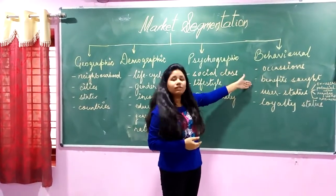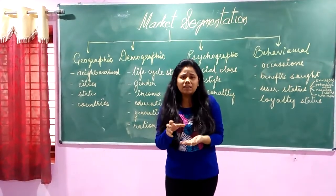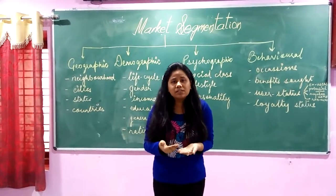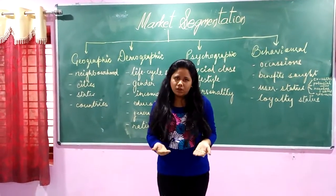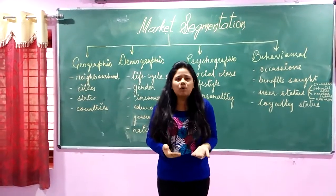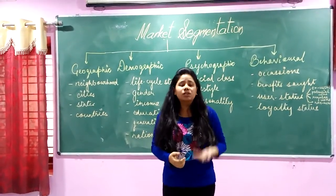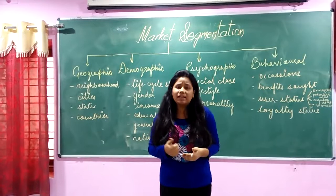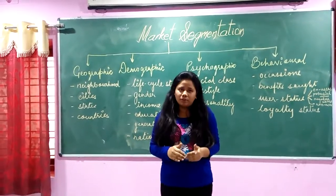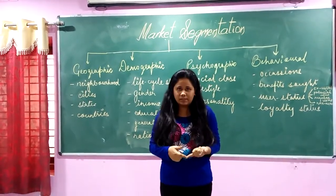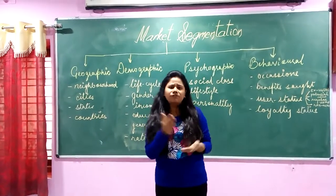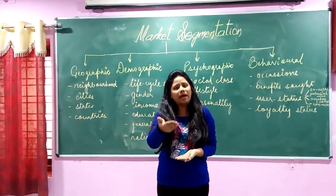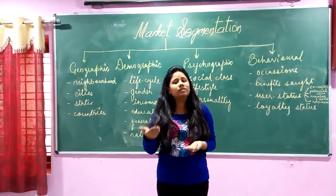We can also divide the market according to benefits sought. When considering mops, what do they seek in a product? They seek durability — it should be usable for the floor. That is the behavior of value-seeking mobs; they actually seek value. When we come to teenagers, we see they look for a product that gives them fashion and style, and should be as friendly and affordable as possible. Different people seek different benefits in a product, so a company can target its product according to the benefits sought by the buyer — whether they are value-seeking or fashion-conscious teenagers.